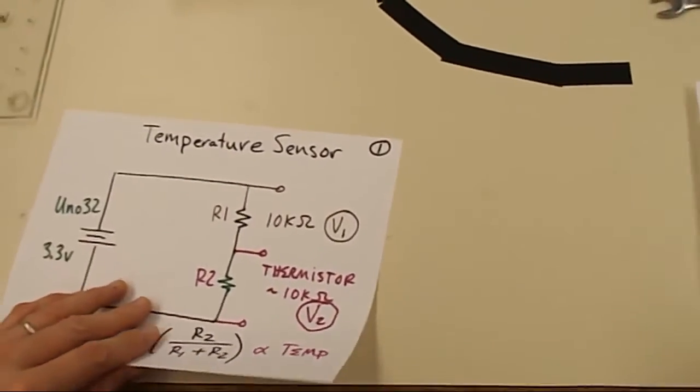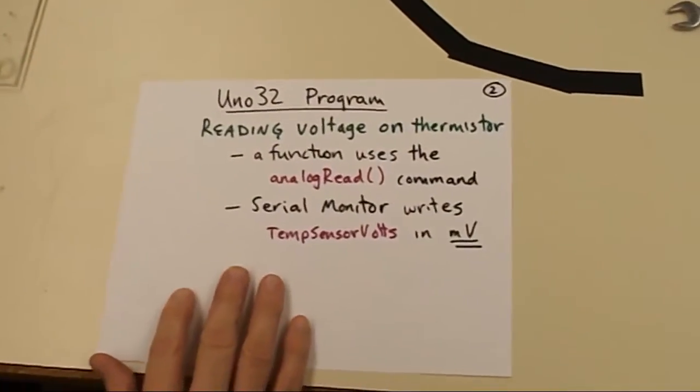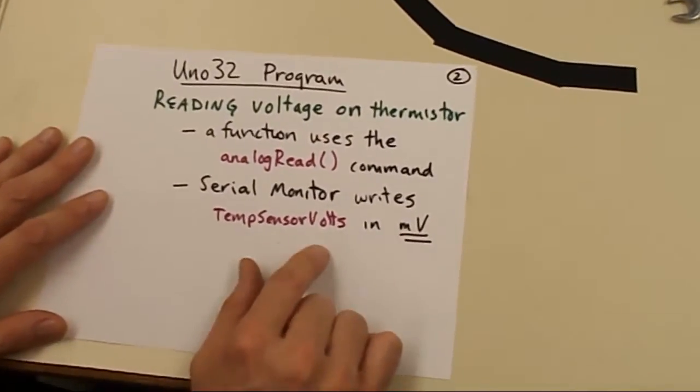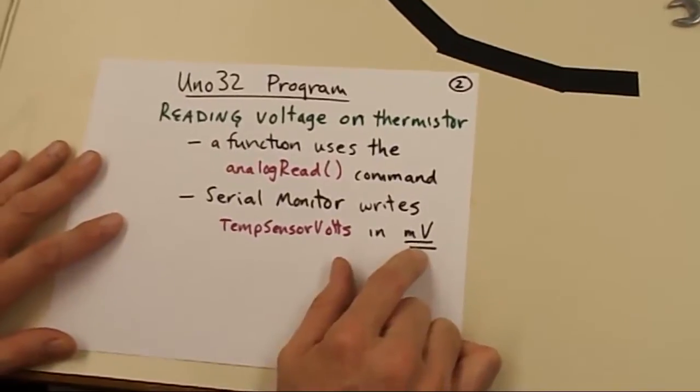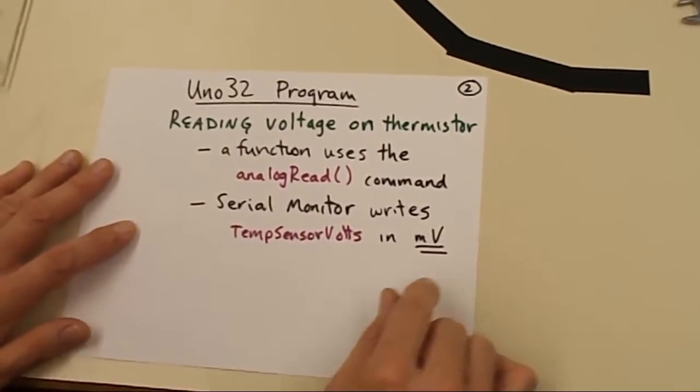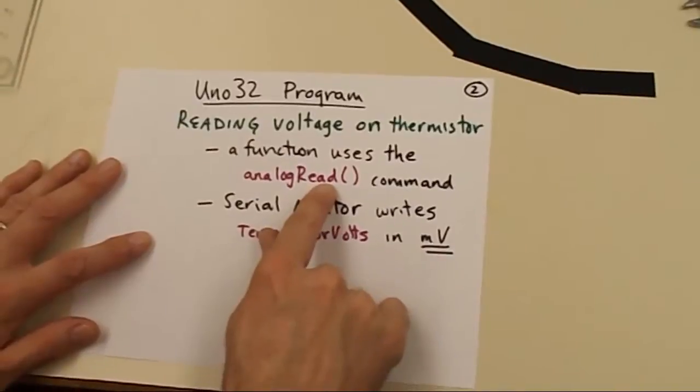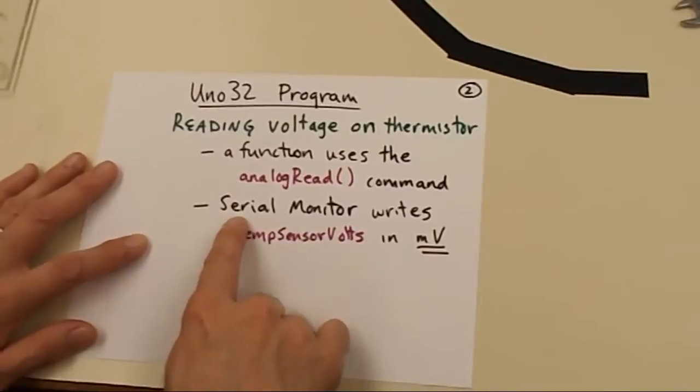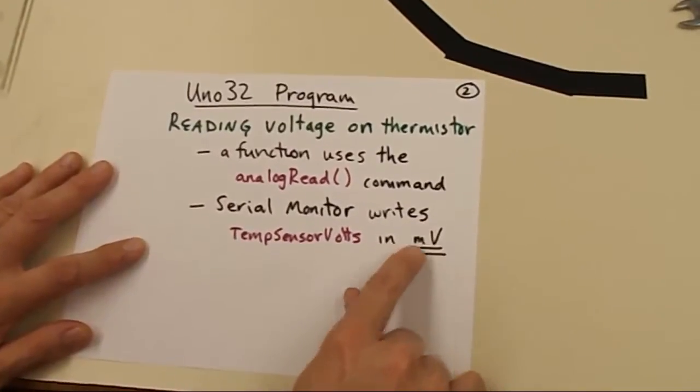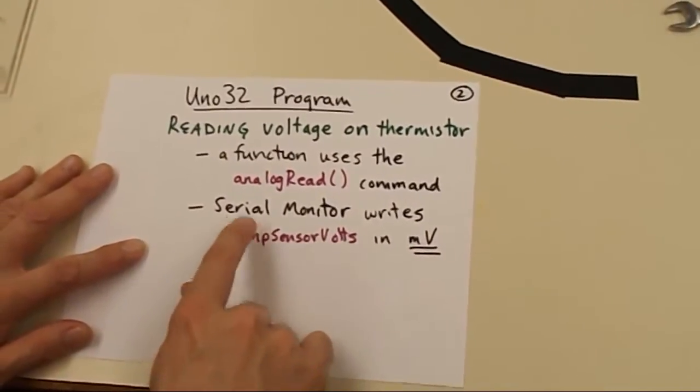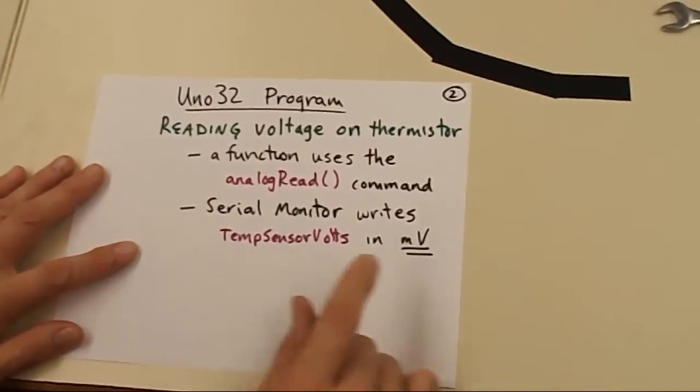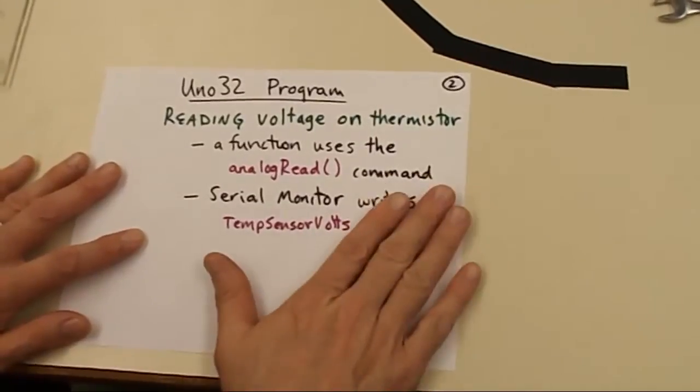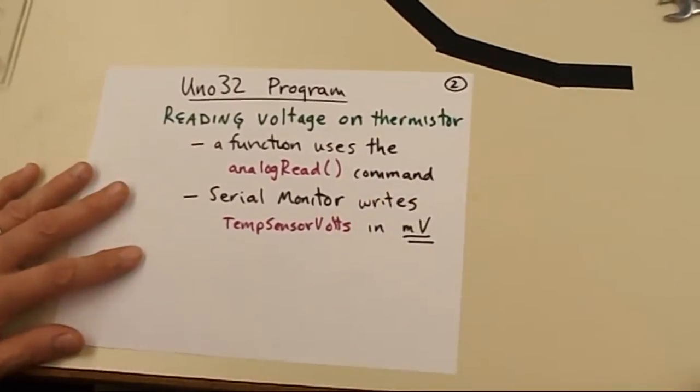So let's take a look at that briefly at the UNO32 programming. So we do have a program already written for this. You'll copy and paste it into your MPID programming environment and it uses the analog read command to capture that voltage and also will write that value out in millivolts using the serial monitor. So these are the two key commands that are in that and so you're going to be using that.